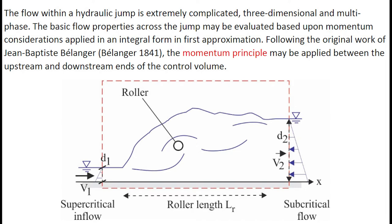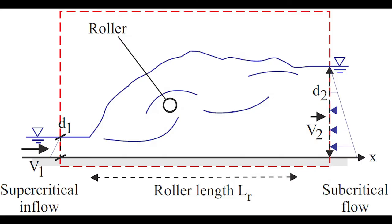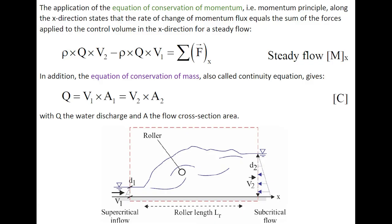Following the original work of Jean-Baptiste Bélanger, the momentum principle may be applied between the upstream and downstream ends of the control volume. The application of the equation of conservation of momentum, also called momentum principle, in the x-direction, states that the rate of change of momentum flux equals the sum of the forces imparted to the control volume in the x-direction for a steady flow.